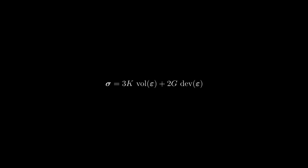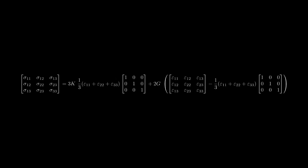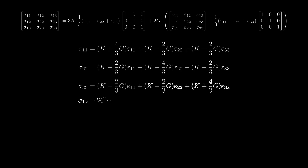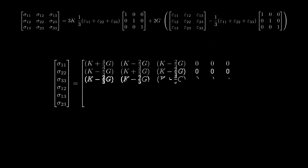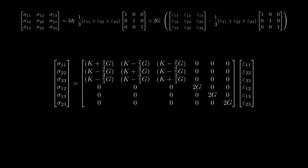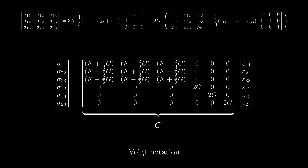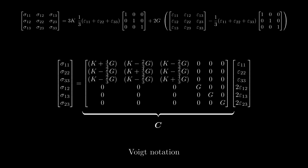To do this we expand the formula of the linear elastic model. After some rearrangements we arrive at 9 equations, one for every stress component. Because both the stress and strain tensors are symmetric, 3 of the 9 equations are redundant, so we discard those. The remaining 6 equations can be written in matrix-vector format using Voigt notation, where all independent components of the stress tensor are gathered in one vector and all independent components of the strain tensor in another. The stress in Voigt notation equals a matrix times the strain in Voigt notation — this matrix is called the stiffness matrix, often abbreviated as C. Note that it is a common convention to move the factors of 2 in the latter three diagonal components of the stiffness matrix into the strain vector, which only affects definitions but not the overall formula.